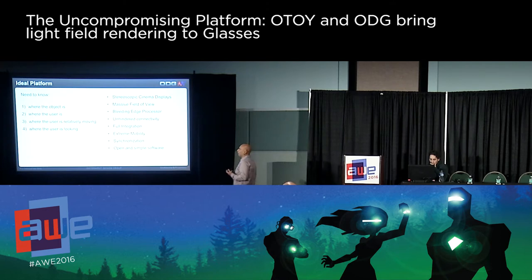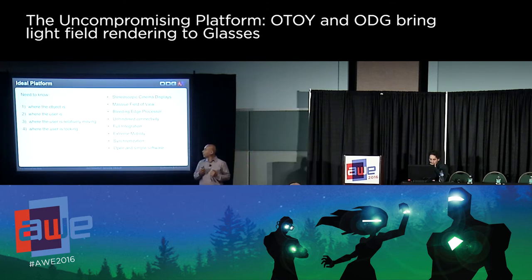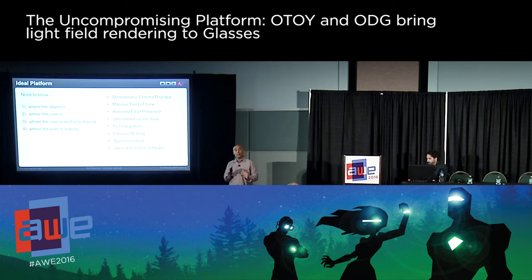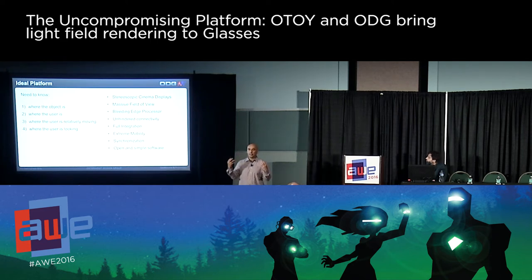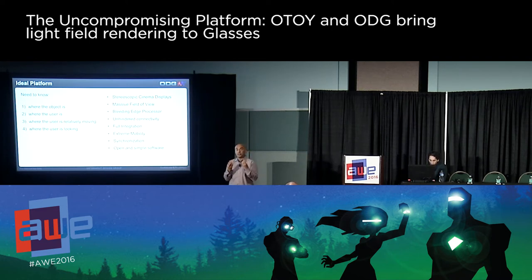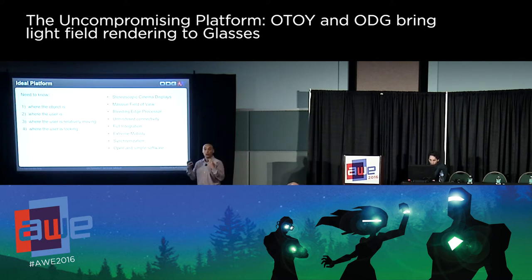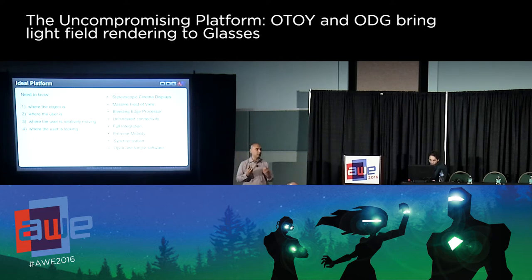The ideal platform needs to know where the object is, where the user is, where the user is relative to moving in that object, and where the user's eyes are looking. If you have those four essential things, you can create light field imagery, because everything we see comes through the same two eyes. As long as you have stereoscopic imagery that understands that information, it can create the effect of light field.